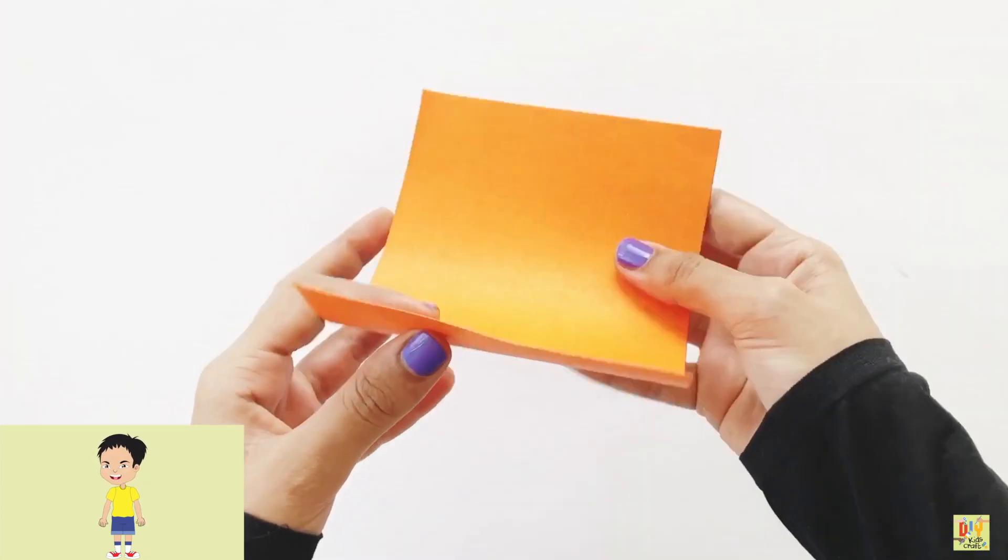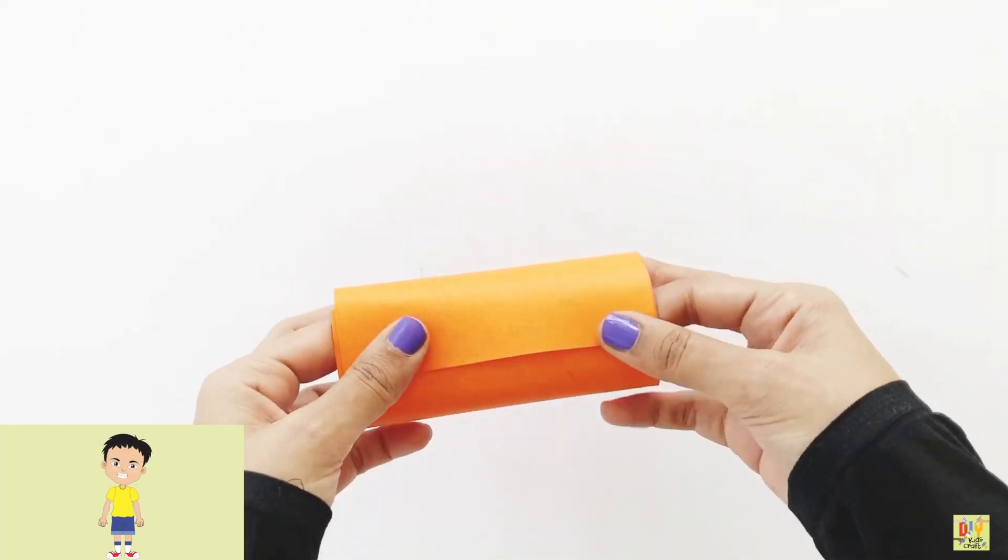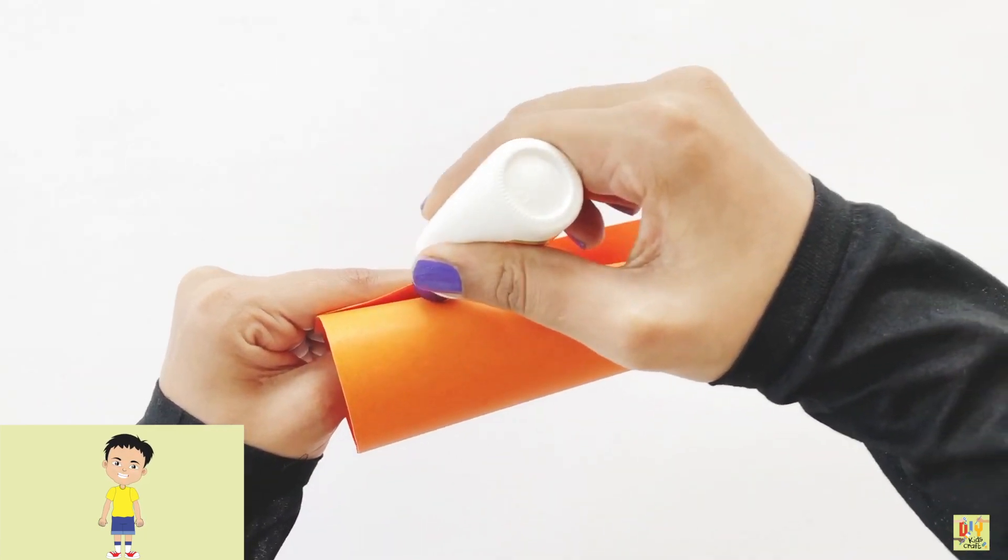First get a piece of paper and make a tissue roll shape and make sure that you use glue to secure the paper.